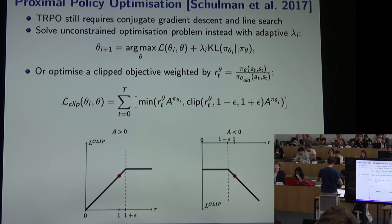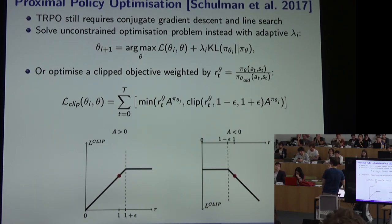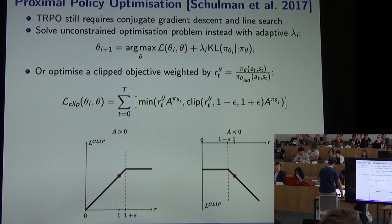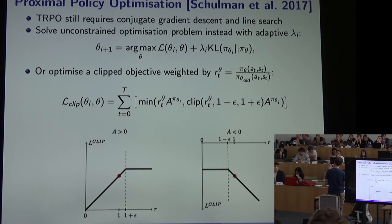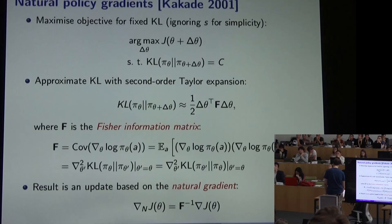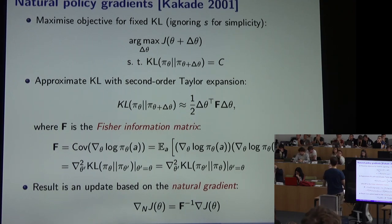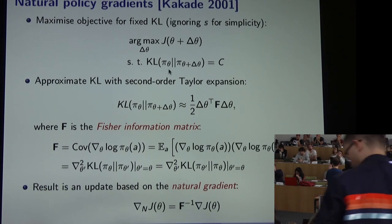TRPO got significant attention but was soon superseded by Proximal Policy Optimization (PPO), which takes all of TRPO's ideas and makes them practical and computationally efficient for deep reinforcement learning. TRPO requires conjugate gradient descent and a line search, both expensive. PPO's idea is simply to solve an unconstrained optimization problem: instead of a KL constraint, we add a KL penalty term, with a hyperparameter weighting it — adapted heuristically based on the step size from the previous iteration.